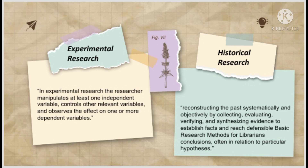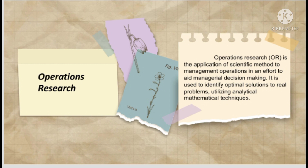Experimental research is a scientific method of conducting research using two variables — independent and dependent — and it manipulates and controls relevant variables. Historical research is the reconstruction of the past that connects and builds relationships with the events of the present. Operations research, or OR, is the application of scientific method to management operations to aid managerial decision-making, used to identify optimal solutions to real problems utilizing analytical-mathematical techniques.